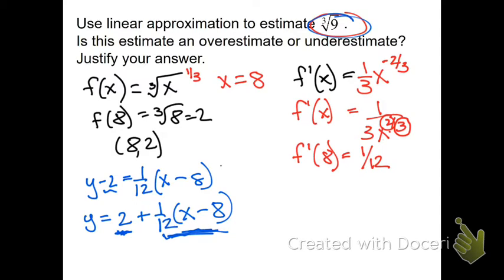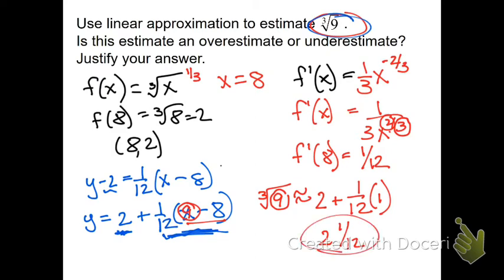So now we plug in the 9. The cube root of 9 is approximately, we're plugging in an x of 9 right here. So we get 2 plus 1/12 of 9 minus 8, which is 1. And 2 plus 1/12 would be 2 and 1/12. And that is my estimate. So now that's my estimated value of the cube root of 9.